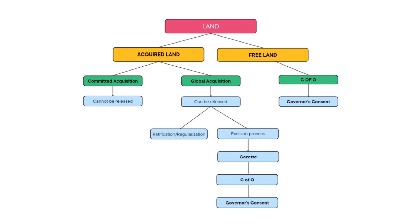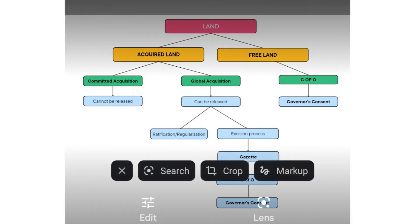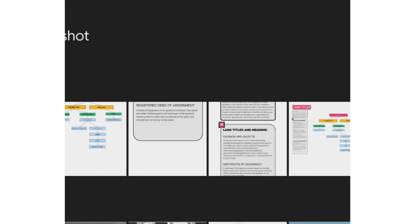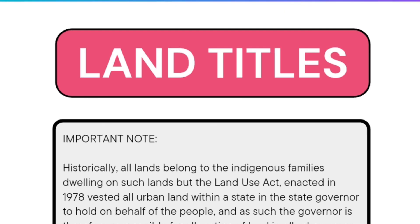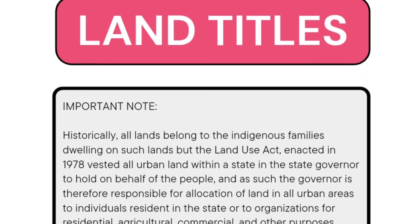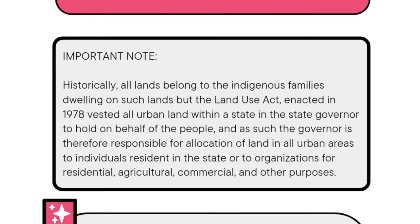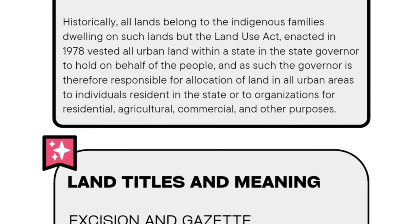You can save this video so you can always refer to it. As a recap, let's look at land titles in Nigeria and their meaning. Historically, all lands belonged to the indigenous families dwelling on them. But the Land Use Act, enacted in 1978, vested all urban land within a state in the state governor to hold on behalf of the people. As such, the governor is responsible for the allocation of land in all urban areas to individuals, residents, or organizations for residential, agricultural, commercial, and other purposes.